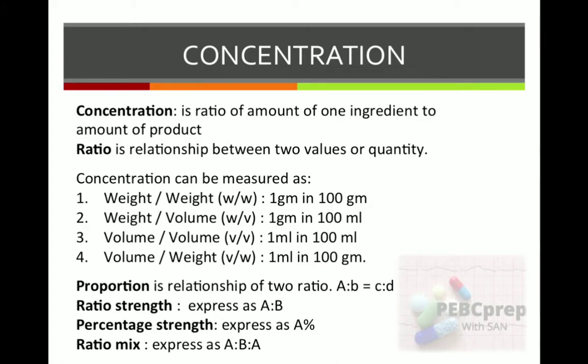Finally, we will discuss ratio mix, expressed as A is to B is to C, meaning two or three ingredients are mixed together in a final product and the ratio of each is calculated. There are also other terms like parts per million and stock solution which we will discuss in upcoming videos. In this video we will stick with these terms and see some simple examples.